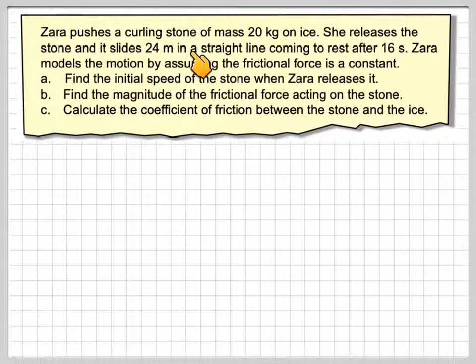Zahra pushes a curling stone of mass 20 kilograms on ice. She releases the stone and it slides 24 metres in a straight line coming to rest after 16 seconds. Zahra models the motion by assuming the frictional force is a constant. Find the initial speed of the stone when Zahra releases it. Find the magnitude of the frictional force acting on the stone and calculate the coefficient of friction between the stone and the ice.